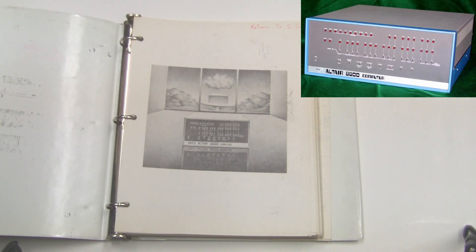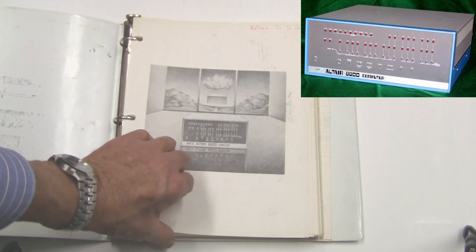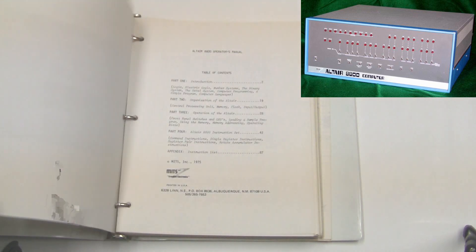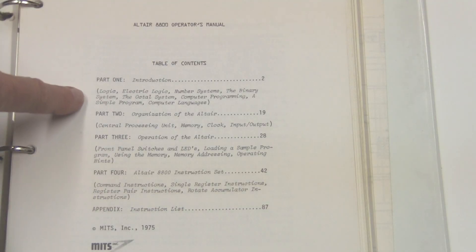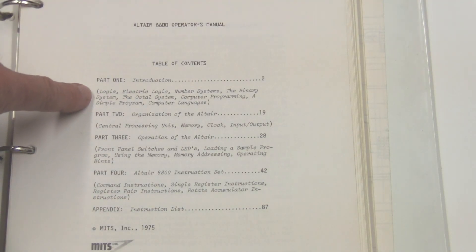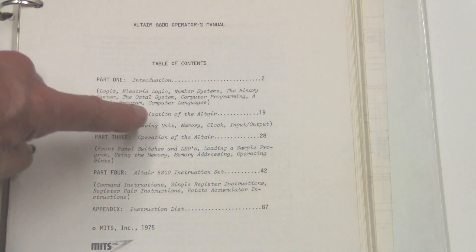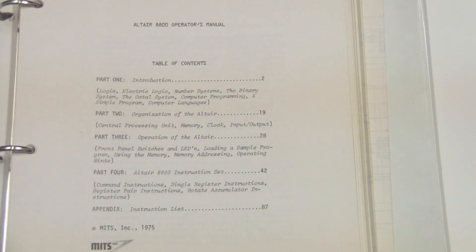Taking a look inside, we see what was probably used as one of the early ads for the 8800 computer — it's all black and white of course. In the table of contents, you see in the introduction they talk about the numbering system, binary, octal, and computer programming. There's a little section here we'll take a look at in a bit.